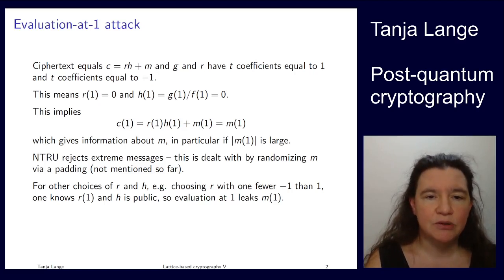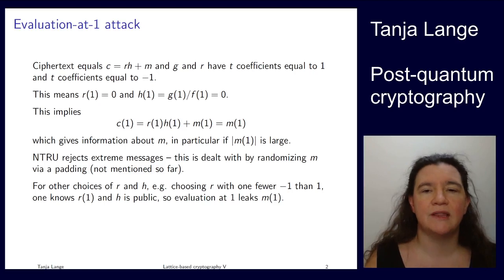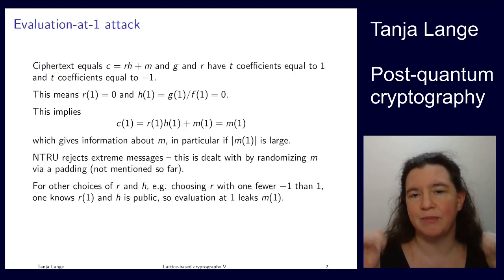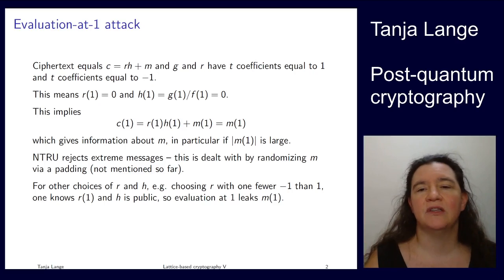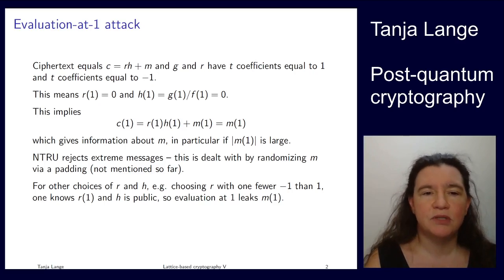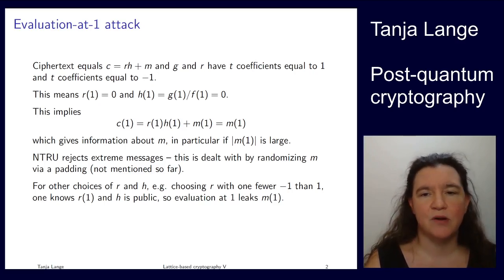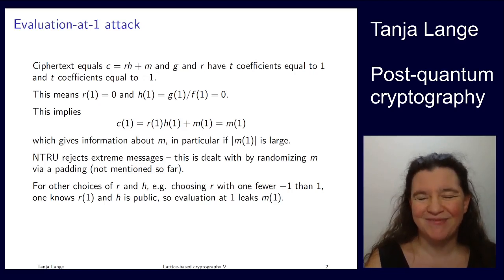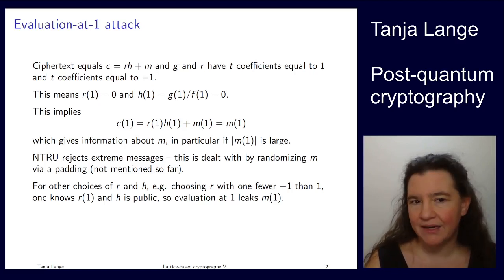NTRU rejects extreme messages, meaning you wouldn't get the all 1 message or the all minus 1 messages. Nowadays we're typically using NTRU as a KEM anyway, so it's sending a random message. But when it was suggested as an encryption system, this was dealt with by having some randomization function applied to m so that there wouldn't be a censorship of what messages you could send — it was all handled by the padding or by this randomization.